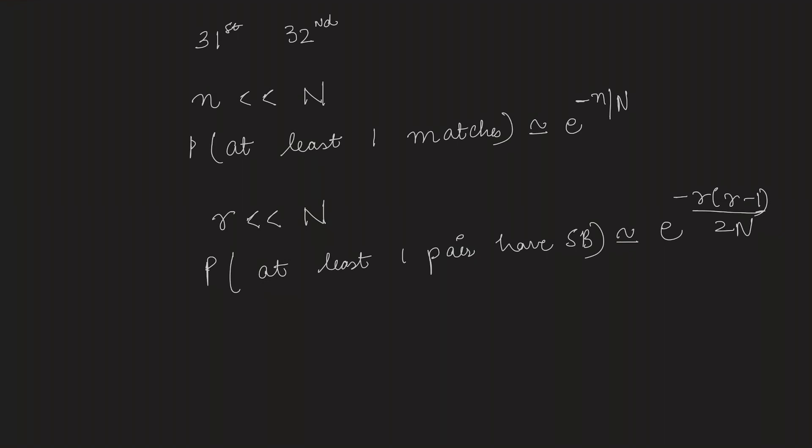For these probabilities to be approximately equal, e to the power minus n by N should equal e to the power minus r times r minus 1 by 2N. Therefore, n comes out to be r times r minus 1 divided by 2. This is the solution.